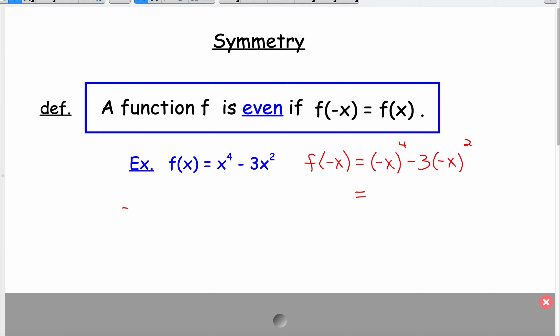What's negative x to the fourth? Well, that's negative x times negative x times negative x times negative x. A negative times a negative is a positive, and then another negative times a negative is a positive. So that winds up just becoming x to the fourth power.